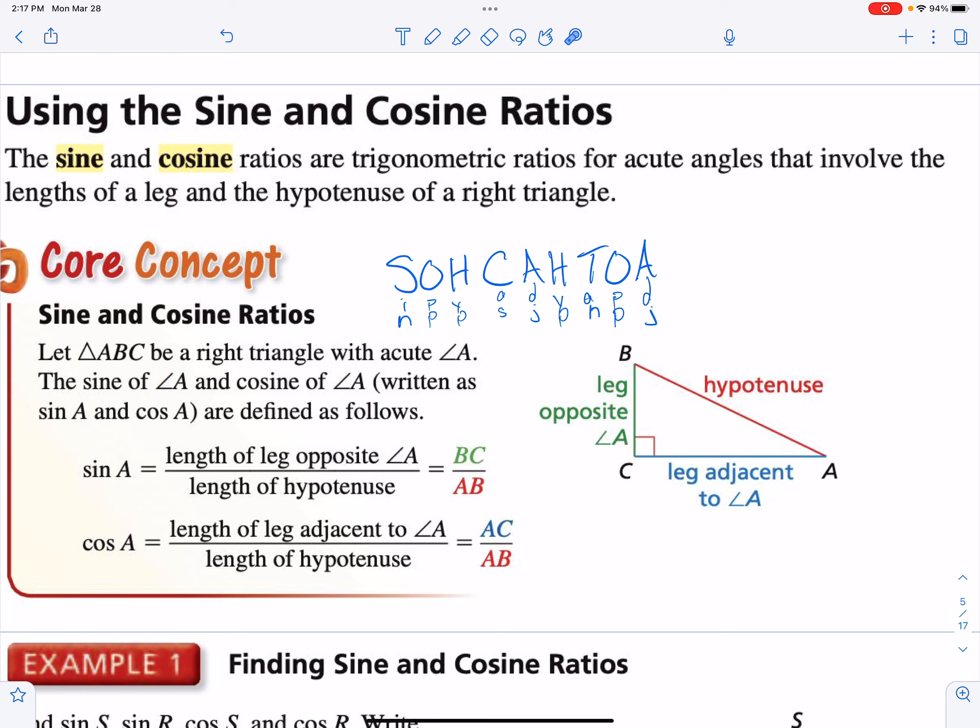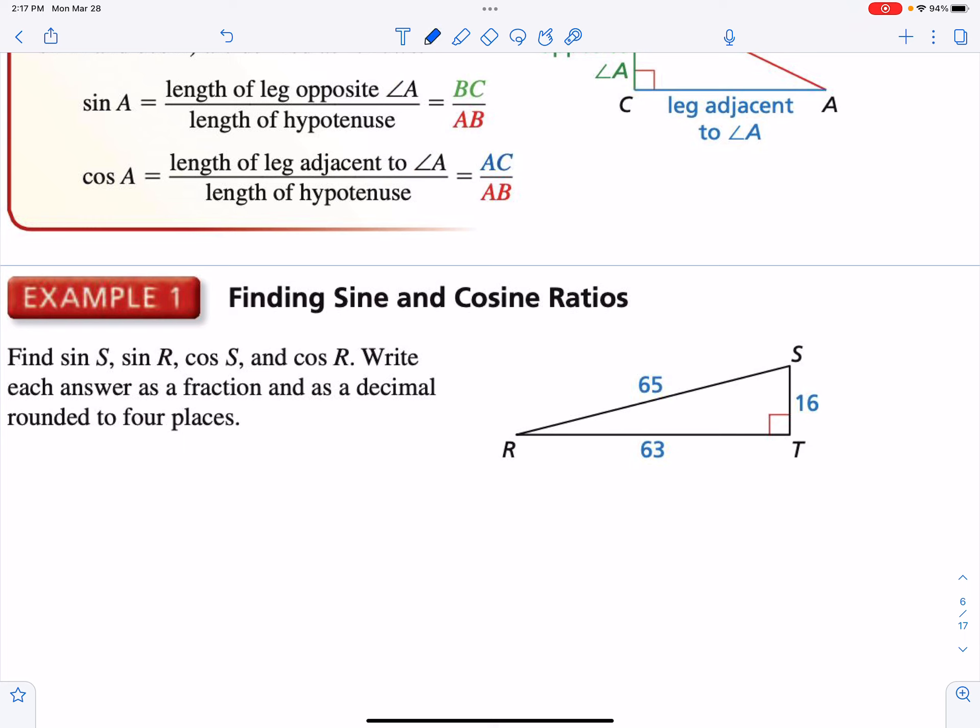Similar to what we saw with tangent ratio, we have to find the fractions of the acute angles and reduce them if we can, and then write them as a decimal to four places. We'll get to why that four places is significant here pretty soon. So on this one, it wants us to find the sine of S, the sine of R, and then it wants us to find the cosine of S and the cosine of R. Let's start with the sine of S. If I look at this acute angle, the ratio is opposite over hypotenuse. So we put 63 over 65.